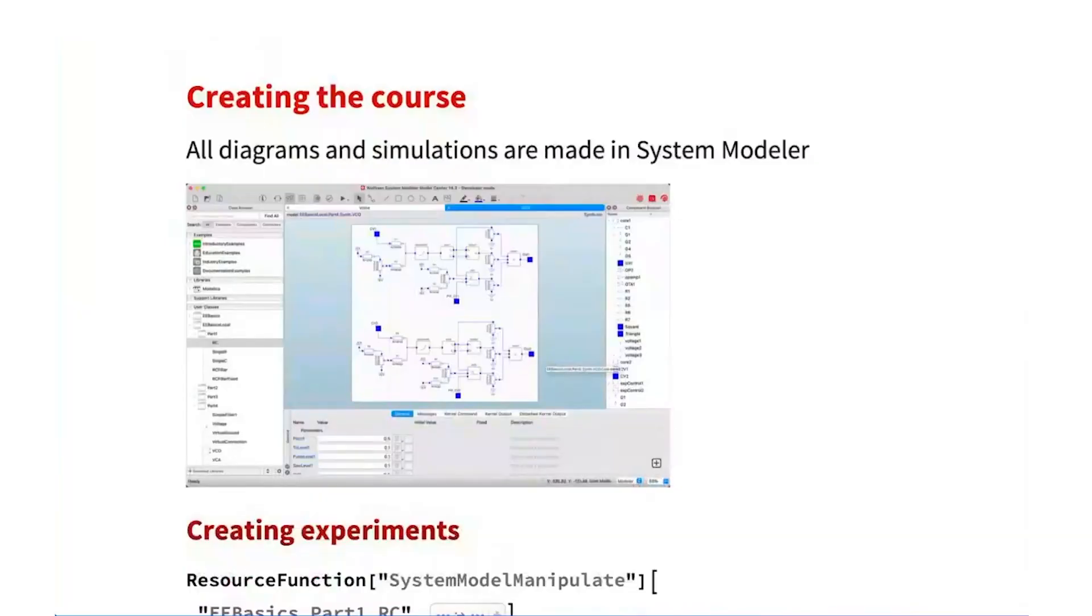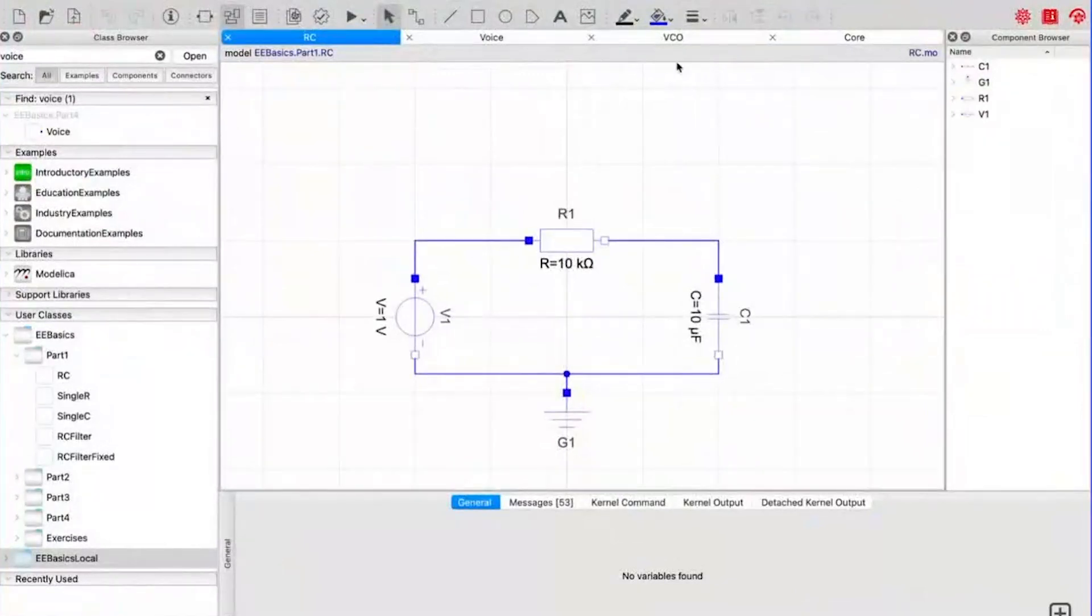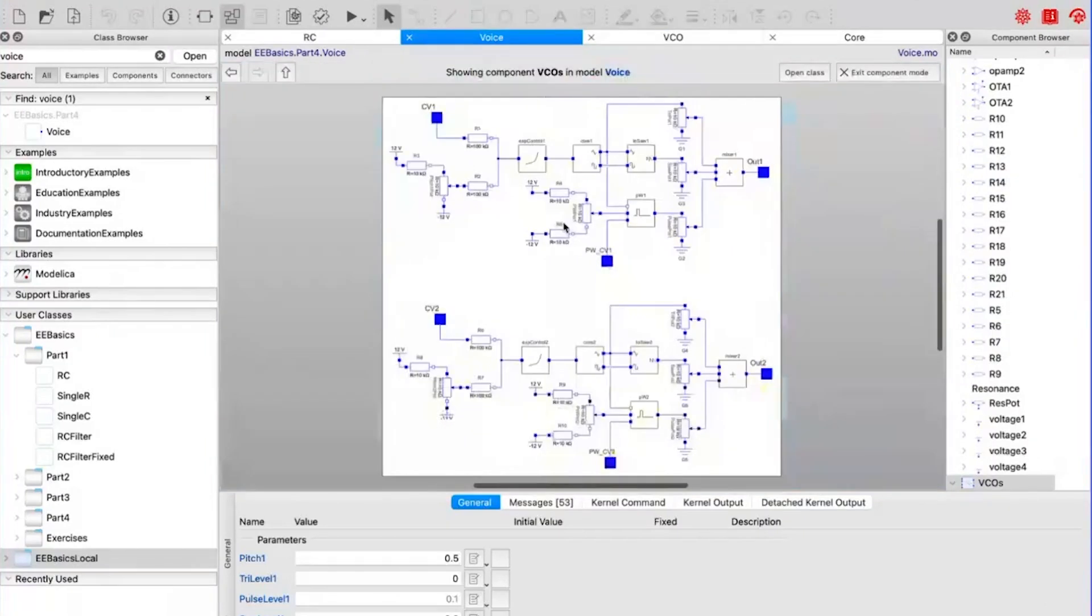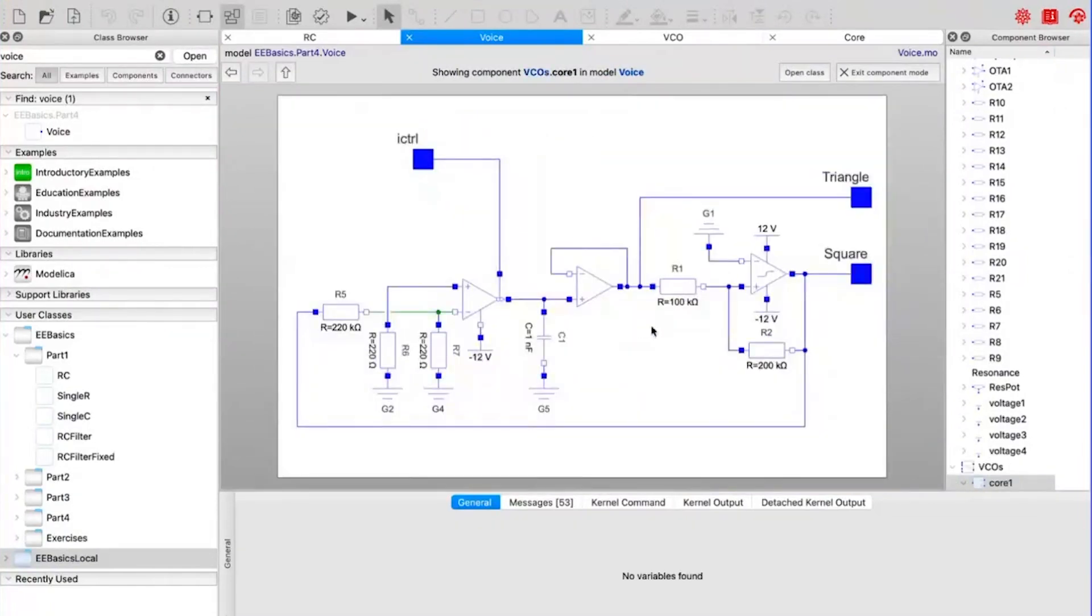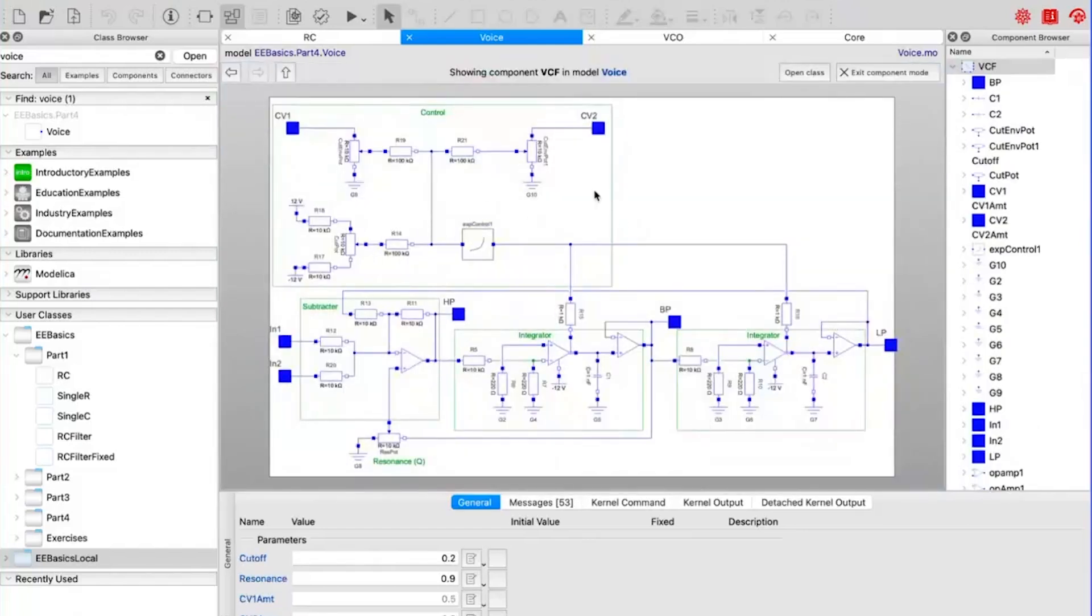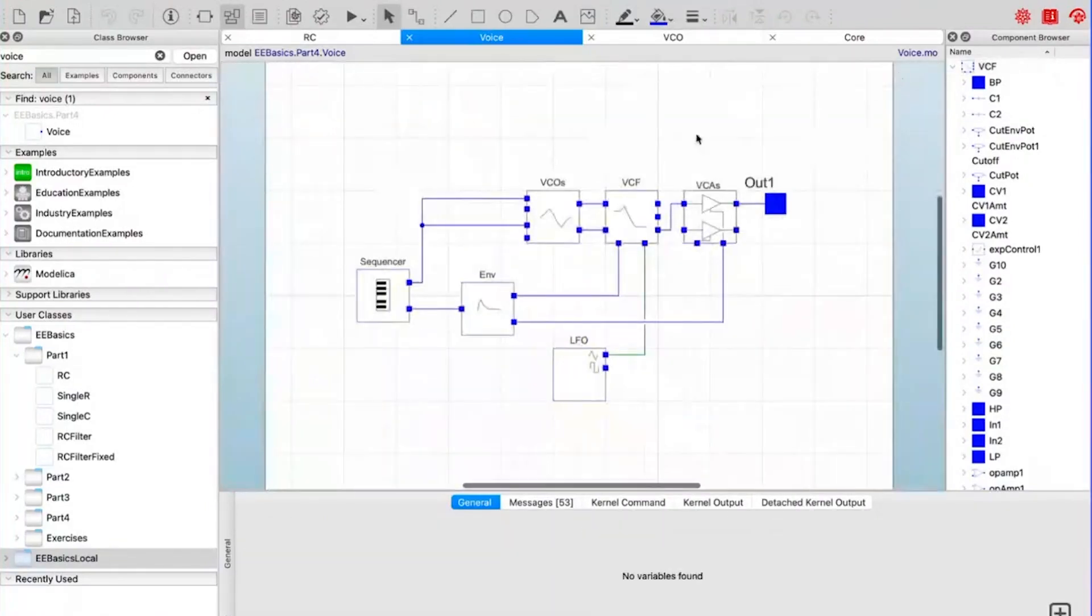And that's basically the whole course. Now I would like to show you how I use System Modeler and the Wolfram Language to create the interactive notebooks. So all the diagrams that we saw were created in System Modeler. These are the synthesizer diagram that we saw before and I can enter inside of these blocks and I can see the electric components that I use and also other subsystems. For example, the core of the oscillator which was this part.